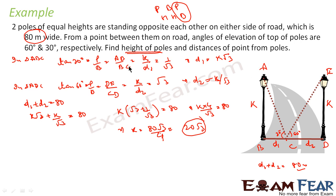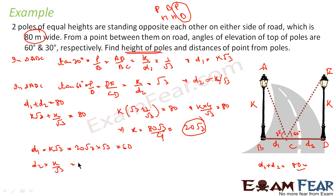Now finding the distances: d1 = k√3 = 20√3 × √3 = 60 meters, and d2 = k/√3 = 20√3/√3 = 20 meters. So the distances of the point from the two poles are 60 meters and 20 meters respectively.